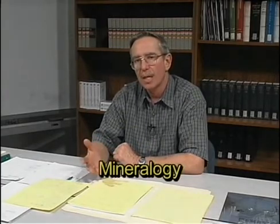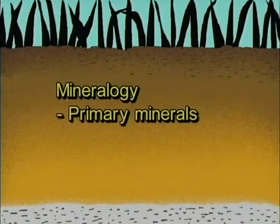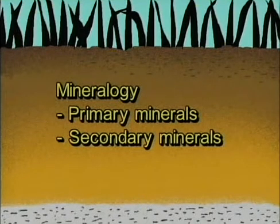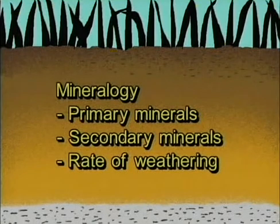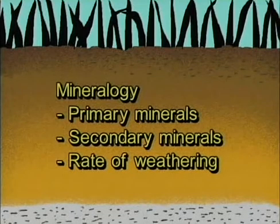What types of properties in a soil are considered to be inherited? Well, probably the best example would be the overall mineralogy and texture of the soil. By mineralogy, we mean what are the types of primary minerals, what are the types of secondary minerals, and at what rate has this weathering and development occurred? That basic mineralogy is a good example of an inherited property of the soil.